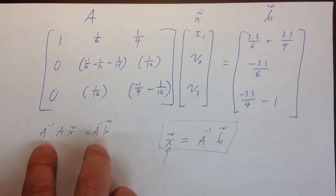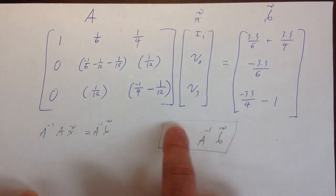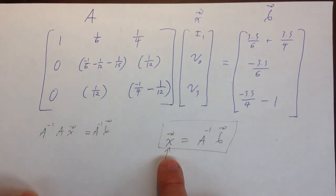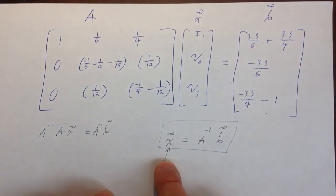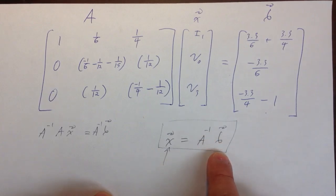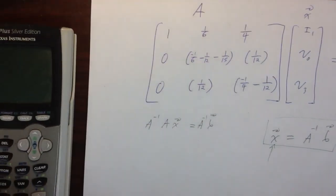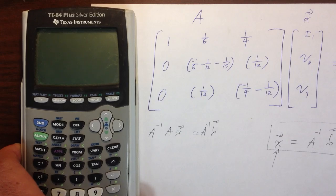Then after I simplify this, A inverse times A gives me my identity, which is essentially like multiplying by one, and then I end up with this expression. I end up with the X vector, my vector of unknowns, and that's what this is. X is equal to my A inverse matrix multiplied by my B matrix, and it's really important that this multiplication has to happen in this order. So anyway, let's go ahead and use the TI-84 to solve this.